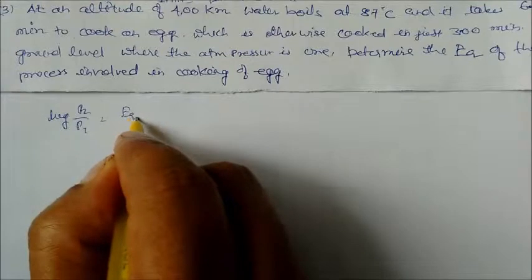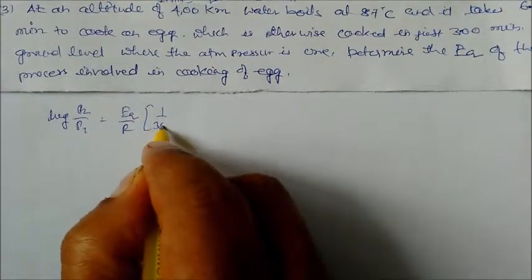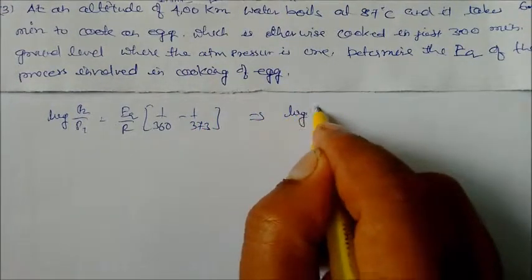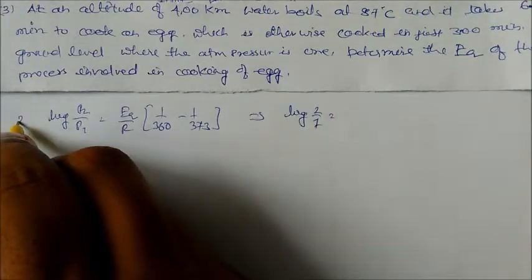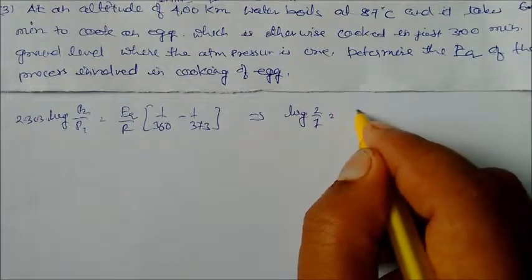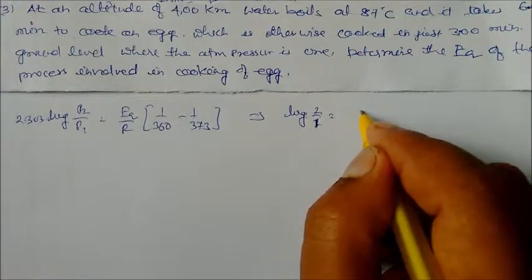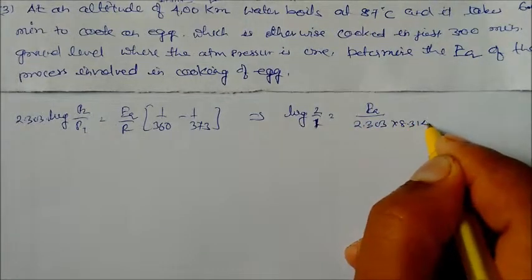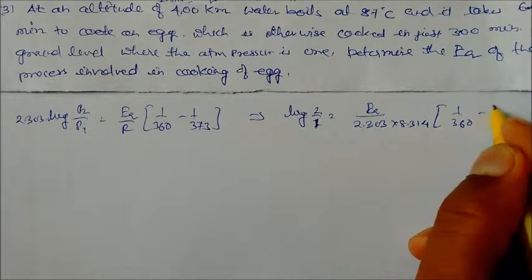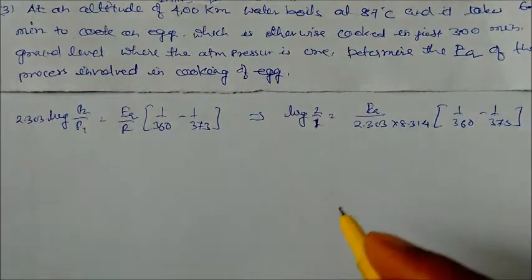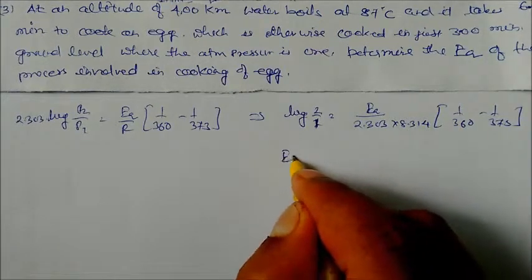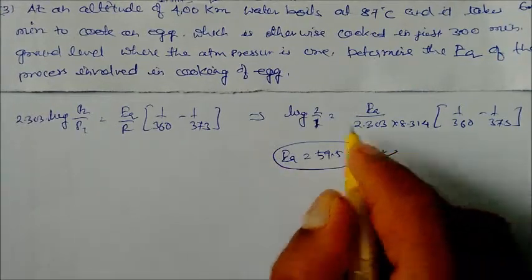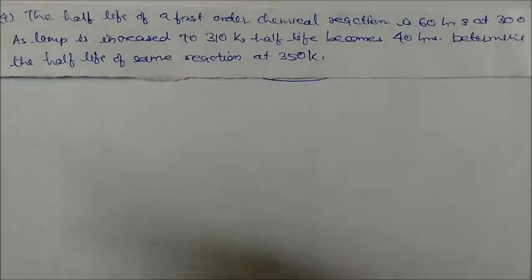We use log(P2/P1) = EA/R × (T difference), with temperatures 360 K and 373 K. So log(2/1) = EA / (2.303 × 8.314) with the temperature term (360 minus 373). On solving, we get EA = 59.5 kilojoule per mole. That is our answer.